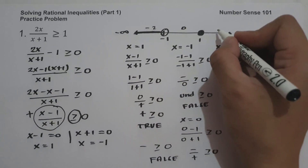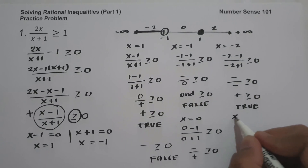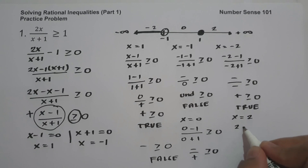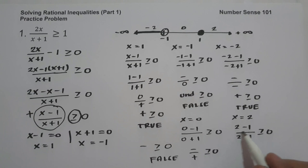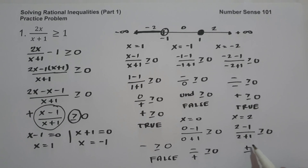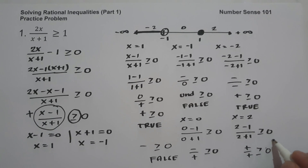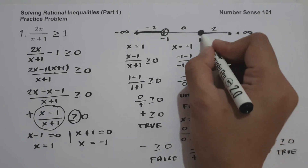Finally, let's test a number greater than 1, say x equals 2: 2 minus 1 over 2 plus 1 is positive over positive, which is positive, greater than or equal to 0. This is true, so I'm going to shade this region as part of our solution.